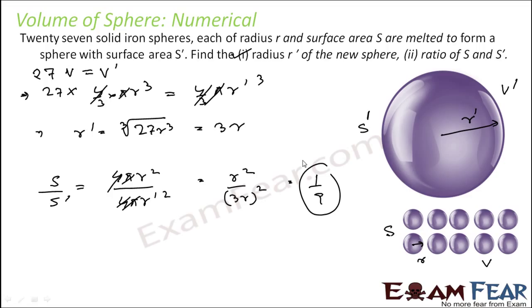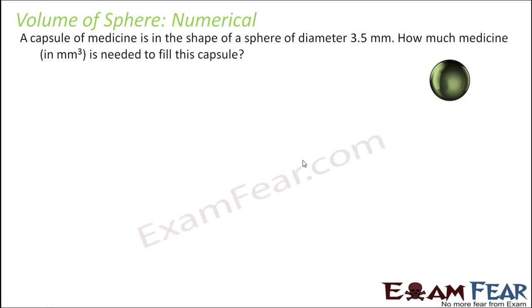The main concept here is that 27 solid iron spheres were melted to form a big sphere. Thus 27 times the volume of the small sphere equals the volume of the bigger sphere.